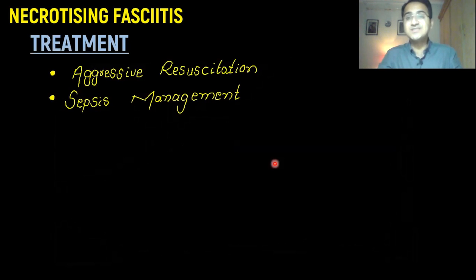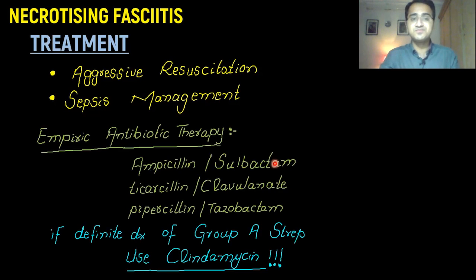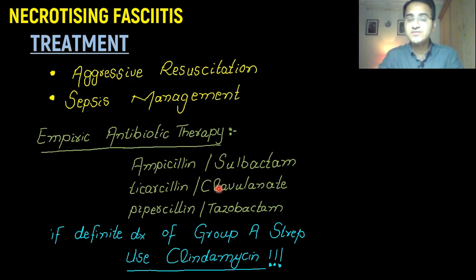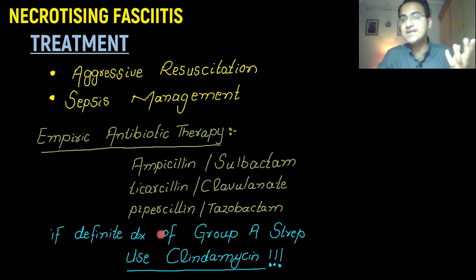In the treatment, since the patient is having severe infection with fever, hypotension, and sepsis, you have to do aggressive resuscitation and go for sepsis management. You have to give empiric antibiotic therapy. Certain combinations can be used: ampicillin-sulbactam, ticarcillin-clavulanic acid, or piperacillin-tazobactam. If you have a definitive diagnosis that the gangrene is caused by Group A Streptococcus, then you can use clindamycin.